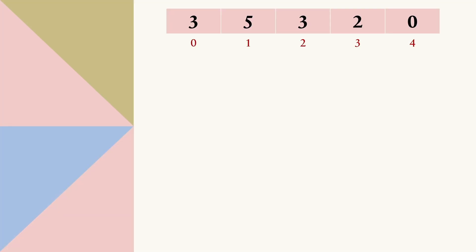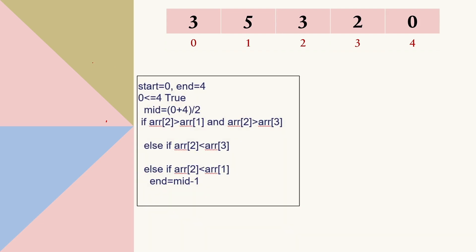Let's understand how binary search will be applied to find the peak index. We can see that 5 is the greatest number, so the peak element must be greater than the element on its left as well as its right — which is true for index 1. Let's see how binary search gets applied: I've set start to 0 and end to 4 (the last index).